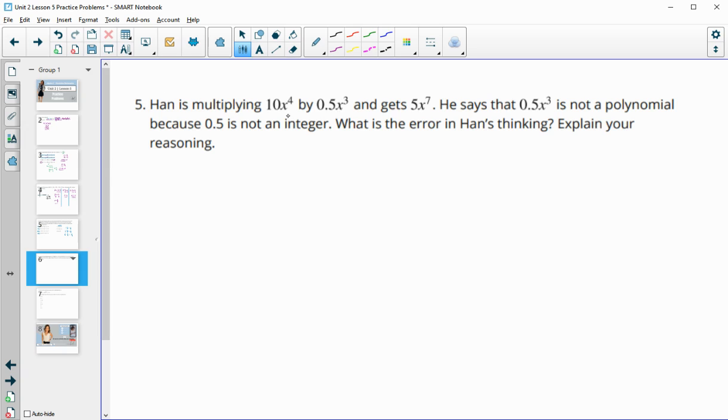Number 5, Han is multiplying 10x to the 4th by 0.5x to the 3rd, and he gets 5x to the 7th. He says that 0.5x to the 3rd is not a polynomial because 0.5 is not an integer. What is the error in Han's thinking? So 0.5x to the 3rd is a coefficient. So 0.5 or 0.5 is a coefficient.